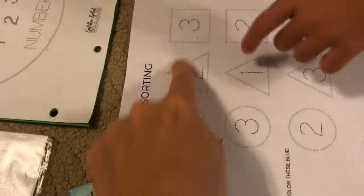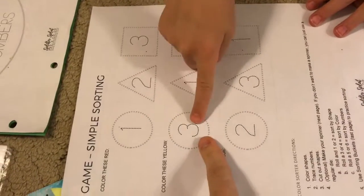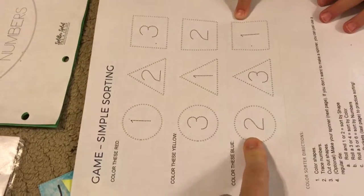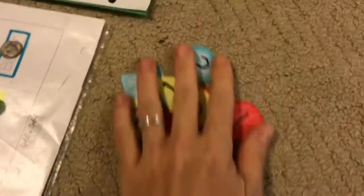So Ava, tell us how to do this. What are you going to do? Color these red, color these yellow, color these blue. And then you're going to cut them out, right? And this is what they're going to look like.